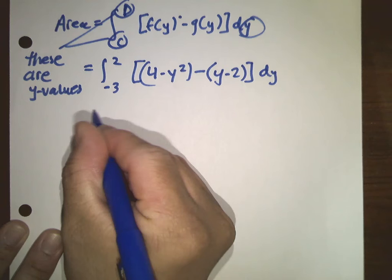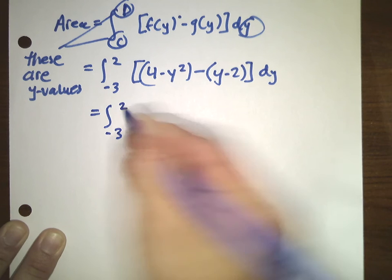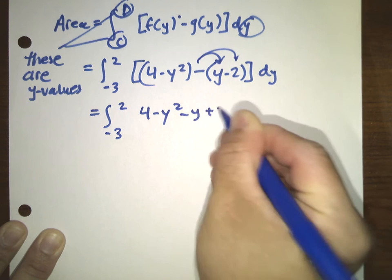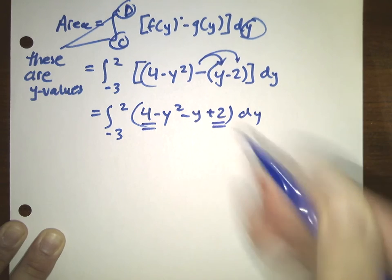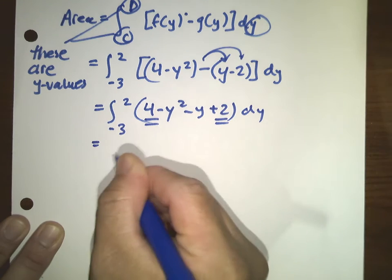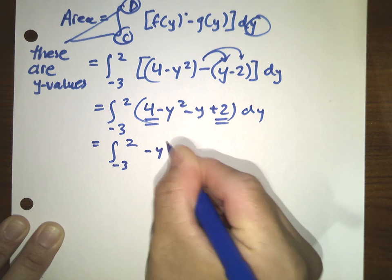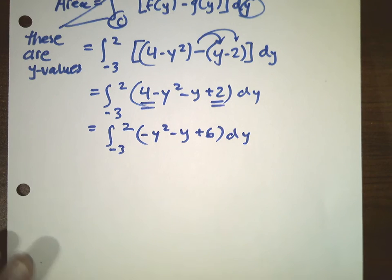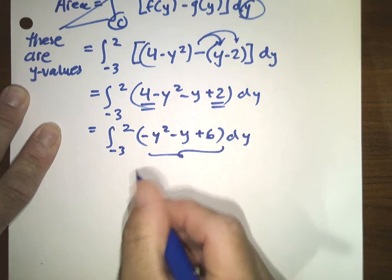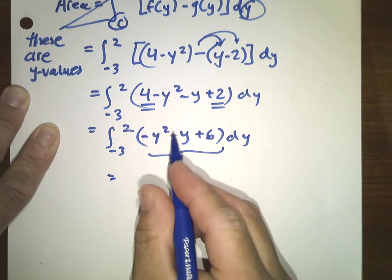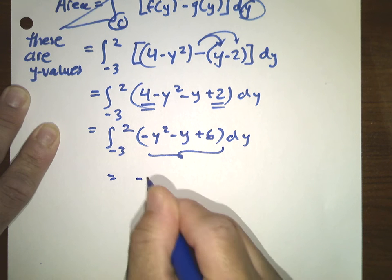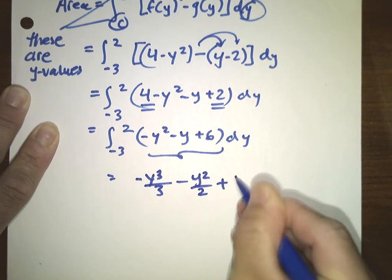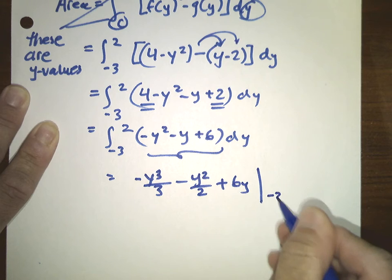So from there: integral from -3 to 2 of 4 minus y squared minus y plus 2 dy. Since 4 plus 2 = 6, we have the integral from -3 to 2 of negative y squared minus y plus 6 dy. Then find the antiderivative: negative y to the third over 3 minus y squared over 2 plus 6y, evaluated from -3 to 2.